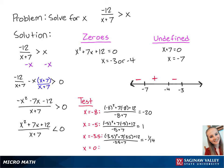For x equals 0, we have 0 squared plus 7 times 0 plus 12, all over 0 plus 7, which is equal to 12 sevenths. Since this number is positive, this means that x values greater than negative 3 will make the left side of the inequality positive.